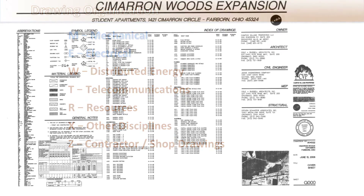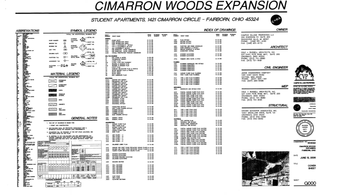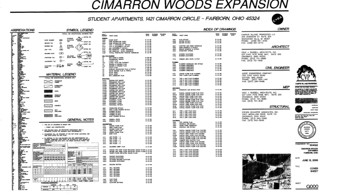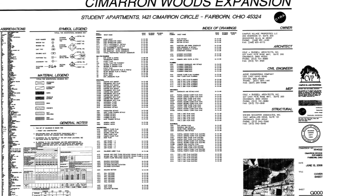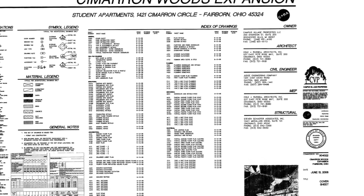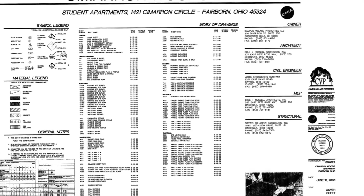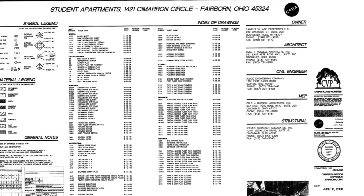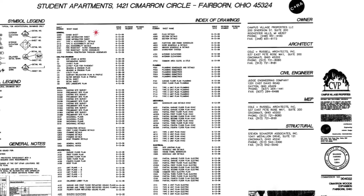The drawing organization is identified and outlined on the title sheet. On the title sheet, you will find a list of drawings for the project. In this example, the title sheet includes an index of drawings. The title sheet is titled G000 Cover Sheet.